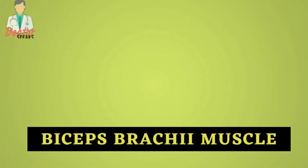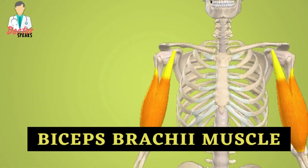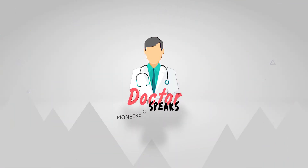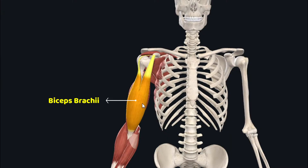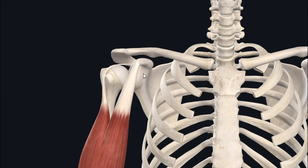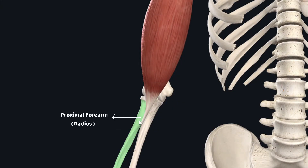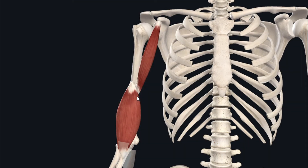Hello viewers, welcome back. Today we are going to discuss the anatomy of the biceps brachii muscle. The biceps brachii is a muscle of the anterior compartment of the arm and it is the most superficial muscle of the anterior compartment. This muscle travels from the scapula superiorly to the proximal forearm inferiorly, and it lies just above the coracobrachialis and brachialis muscles.